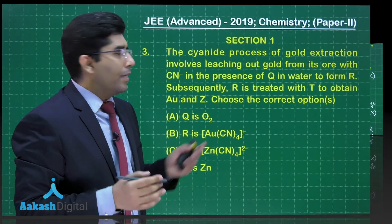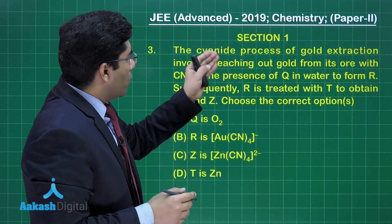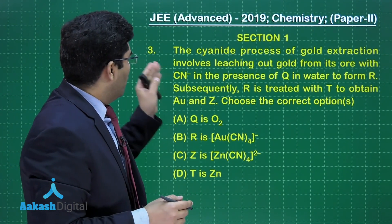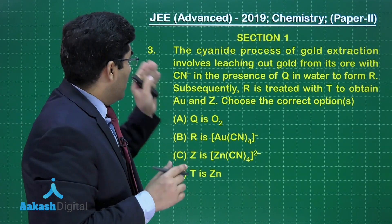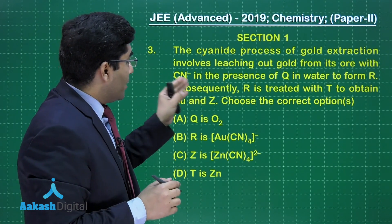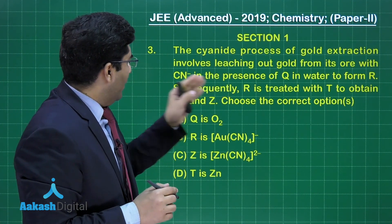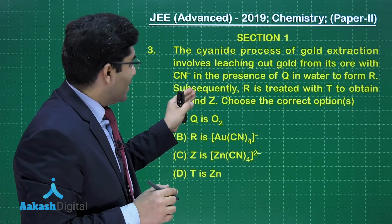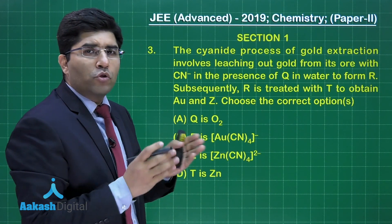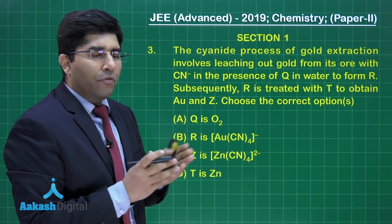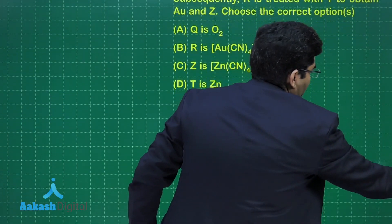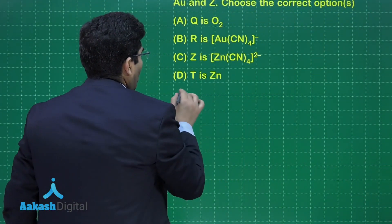So the correct answer for question 2 is options (A), (B), and (C). Let's move on to the next question. This question asks about the cyanide process of gold extraction, which involves leaching gold from its ore with CN⁻ in the presence of Q in water to form R. Subsequently R is treated with T to obtain gold and Z. We need to choose the correct options.